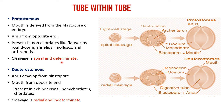The second type is deuterostomes, which is the opposite. The cleavage is radial and the blastopore forms the anus, while the mouth forms at the opposite end. Deuterostomes are present in echinoderms, hemichordates, and chordates. Here the cleavage is radial and indeterminate.